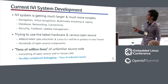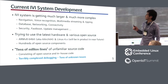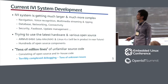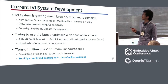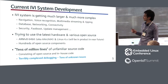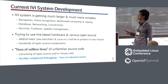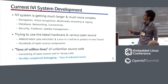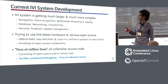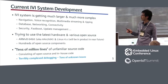The current IVA system is getting much larger and much more complex. IVA systems have really massive features such as navigation, voice recognition, multimedia streaming and ripping, database networking, connectivity, and so on. To meet those wide requirements, we are trying to use the latest hardware such as ARM V8 64-bit architecture known as AX64, and also a newer version of Linux kernel like 4.x, which has the latest drivers for AX64.